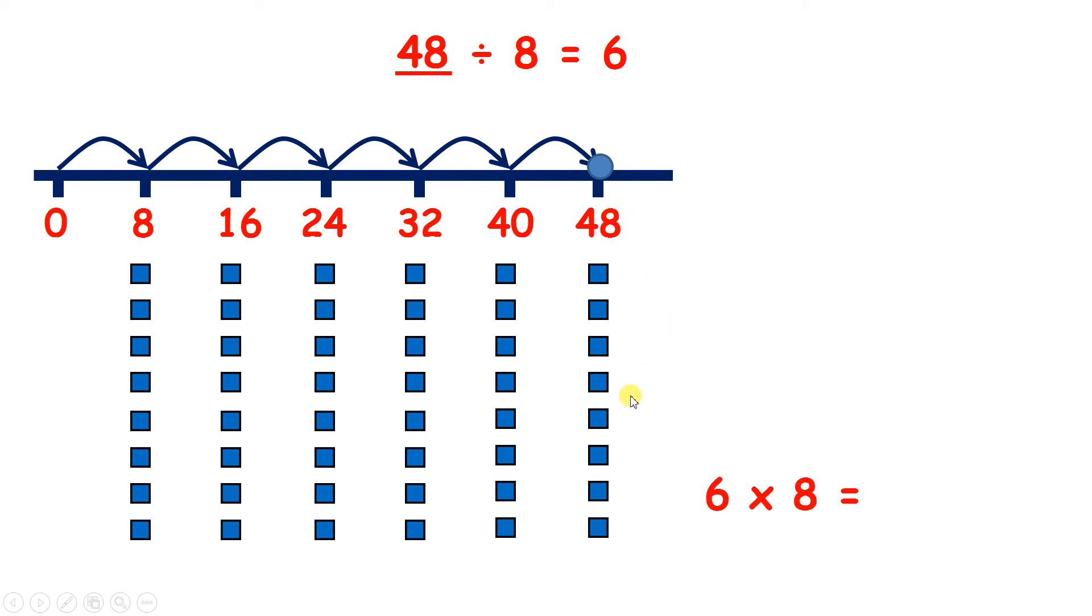And what we really did here, to find our answer, is 6 times 8, which is 48. And if we know that 6 times 8 is 48, we know that 48 divided by 8 is 6. And we also know that 48 divided by 6 is 8, because with division, you can swap the divisor and the quotient around to get a different number fact.